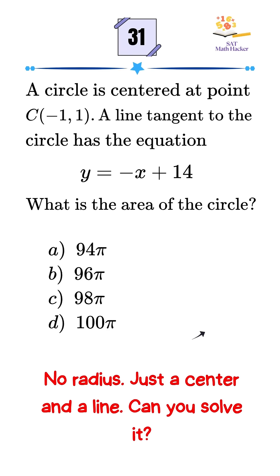In this SAT problem, we're told that a circle is centered at point C, with coordinates negative 1, 1. A line tangent to this circle has the equation y equals negative x plus 14. We're asked to find the area of the circle.